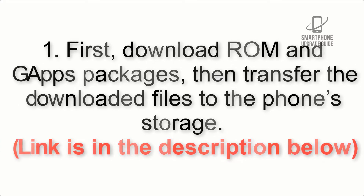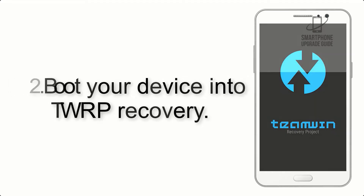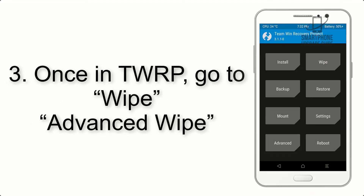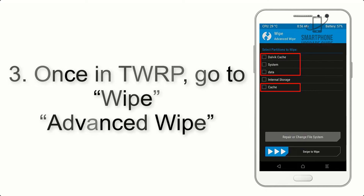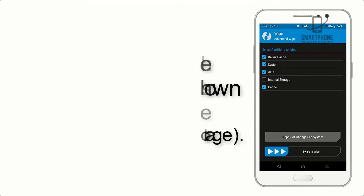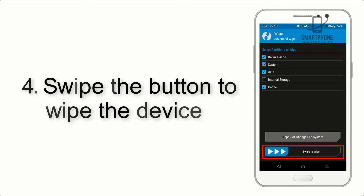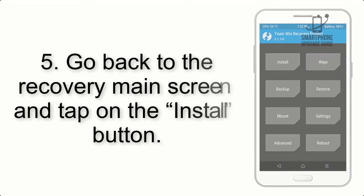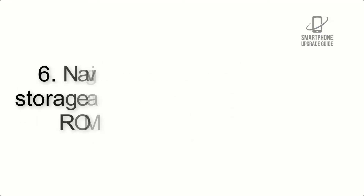The link is in the description below. Step 3: boot your device into TWRP recovery. Once in TWRP, click on Wipe, then Advanced Wipe, and select the checkboxes as shown in the image, excluding internal storage. Step 4: swipe the button to wipe the device.